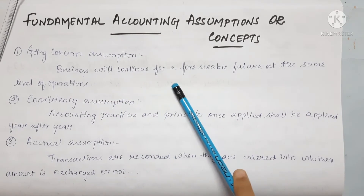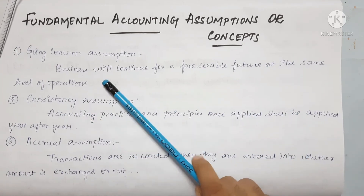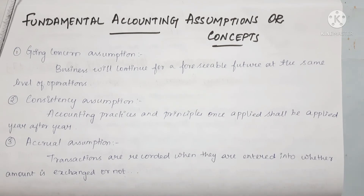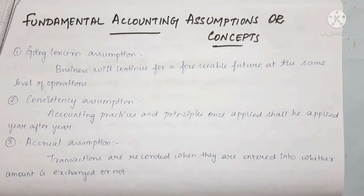The first assumption is the going concern assumption. Business will continue for the foreseeable future at the same level of operations. If we are doing the same operations, we will continue doing them. As the saying goes, men may come and men may go, but business will continue. In any case, business will continue. This is the meaning of the going concern assumption.